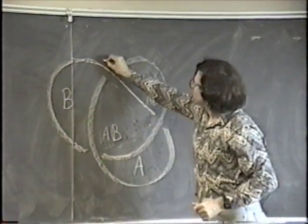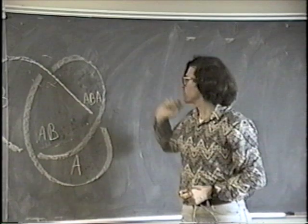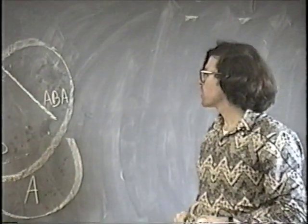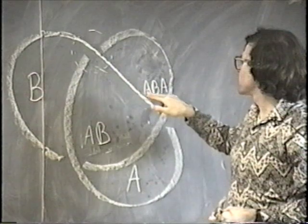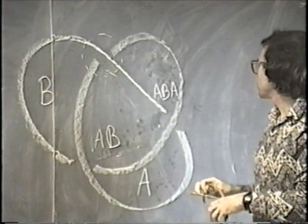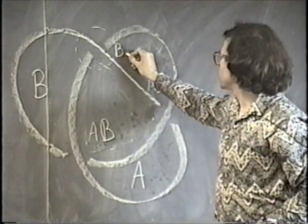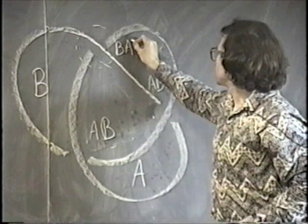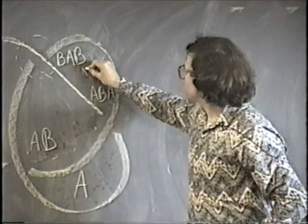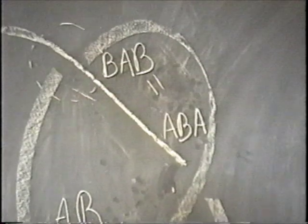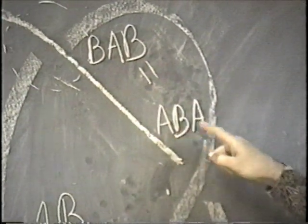I can also use this region of the knot to find an alternate route to get through the upper left. Namely, I can come back through B and then down through AB, and that'll be the same as going through the middle. Writing it out: going back through B and then through AB achieves the same effect. So I have the equation BAB equals ABA — I get to the same place by first doing B, then A, then B, as I do by doing A, then B, then A.